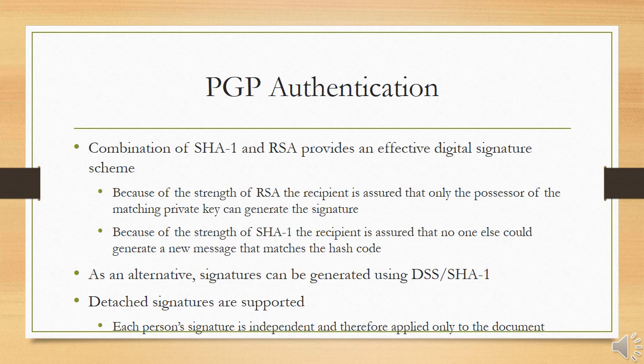Hence the signature of the original message. As an alternative, signatures can be generated using DSS with SHA-1. Although signatures are normally found attached to the message or file that they sign, this is not always the case — detached signatures are supported. A detached signature may be stored and transmitted separately from the message it signs. A user may wish to maintain a separate signature log of all messages sent or received.